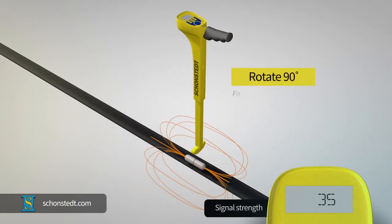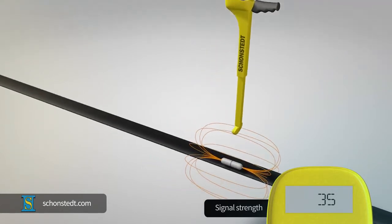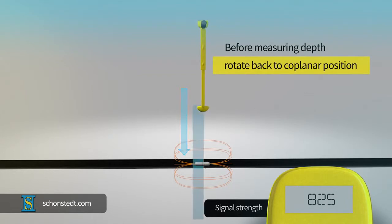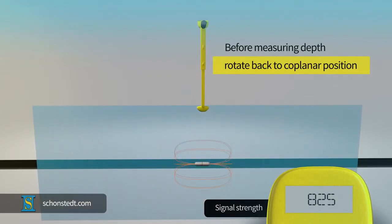You can move back to find the strongest signal and at that point, rotate the receiver 90 degrees, verifying that the signal drops significantly to a null. At this time, you can attempt to measure the depth with the receiver, but you must remember to rotate the receiver back to a coplanar position when the signal is strongest before measuring the depth.